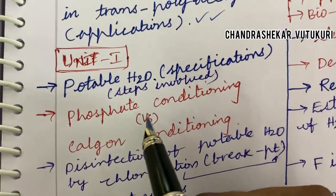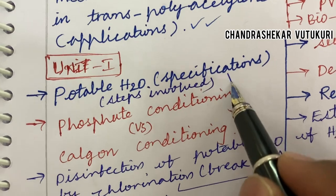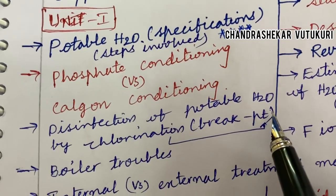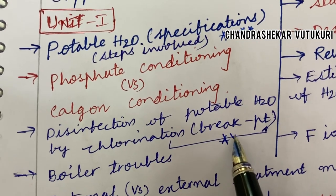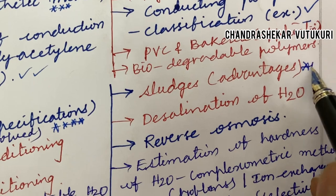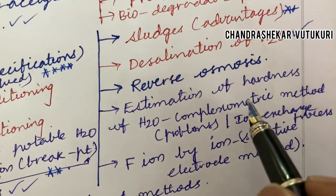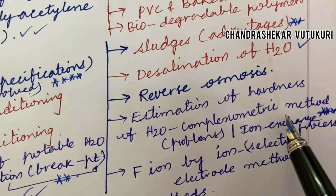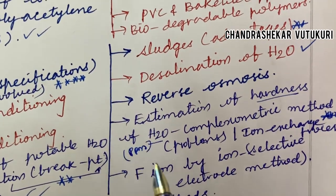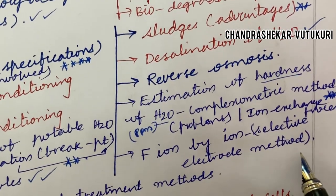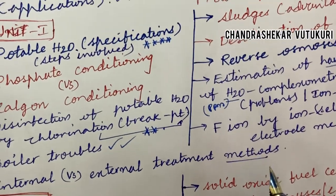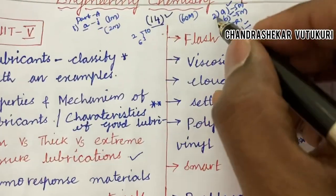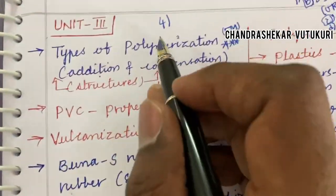Let's jump into Unit 1 — it is all about portable water specifications and the steps involved, which may be the topmost question. Phosphate conditioning versus Calgon conditioning, and disinfection of portable water by chlorination and the break-point chlorination, may be topmost questions. Boiler troubles may be a short question. Sludge and their effects, desalination of water by reverse osmosis, estimation of hardness of water by the complexometric method, and problems on ion exchange process are important questions. Problems related to hardness of water to find PPM is a topmost question. Determination by ion-selective electrode method is also a topmost question. Internal versus external treatment methods is also very important — this is question number 2 or 5.